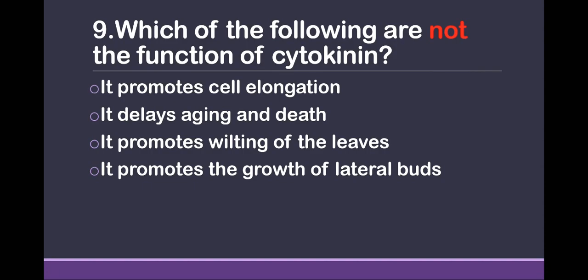Question 9: Which of the following is not a function of cytokinin? Option 1: it promotes cell elongation. Option 2: it delays aging and death. Option 3: it promotes wilting of the leaves. Option 4: it promotes the growth of lateral buds. The answer is: it promotes wilting of the leaves.